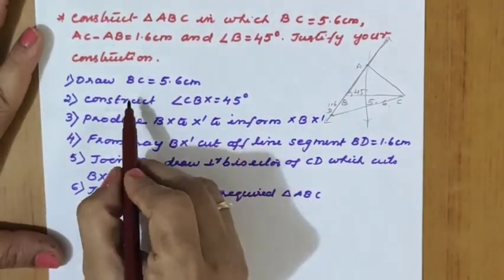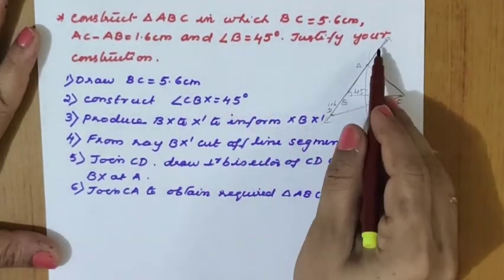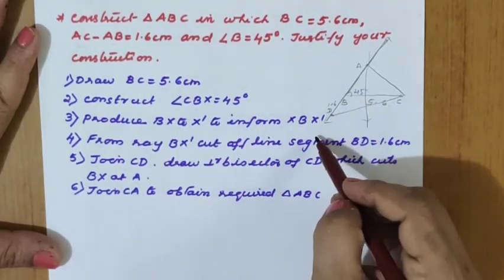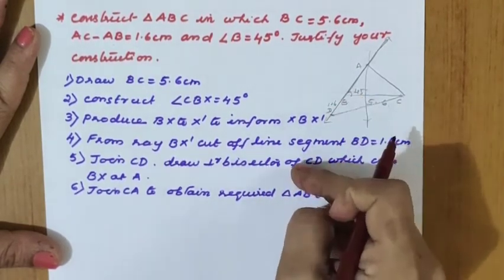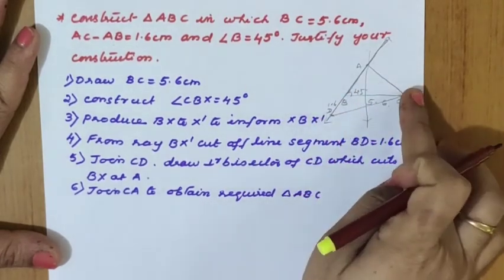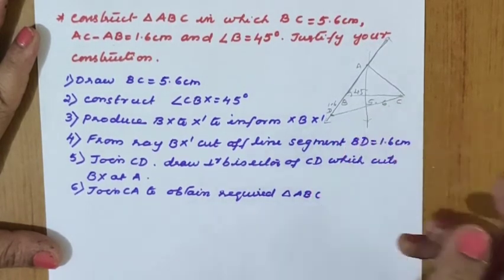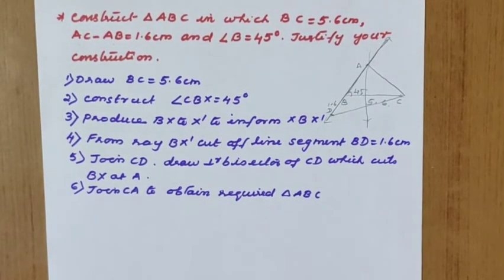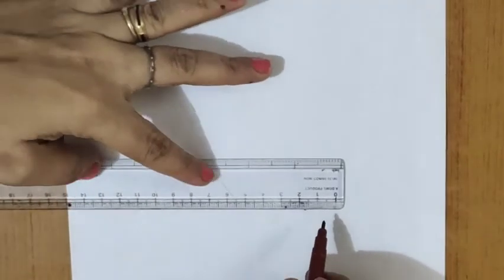Steps: draw BC equals 5.6, construct angle CBX equals 45 degree, then produce BX to X-dash — that is, extend the ray in the backward direction — and cut line segment BD equals 1.6 on BX-dash, because the other side is greater. Mark this as D. Join CD, draw the perpendicular bisector which cuts BX at A, and join CA to get the required triangle.